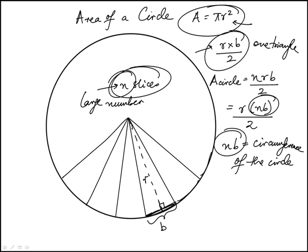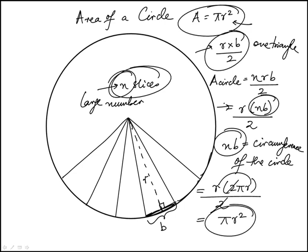And so I can replace in that limit that n is a really large number. However, this would become exactly equal to radius times 2 pi r, the circumference is 2 pi r, over 2. And then here the 2 drops out, and I have 2 r's, and this becomes pi r squared.